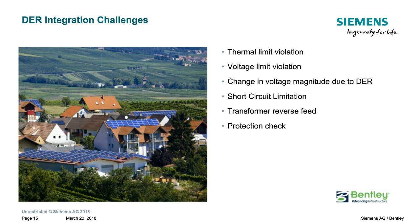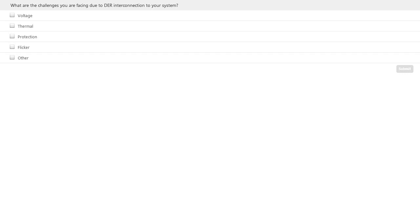Distributed energy resources provide many advantages; however, integration presents significant challenges. These include thermal limit violation, voltage limit violation, rapid voltage fluctuation of PV causing flickering issues, short circuit limitations, transformer reverse feed, and protection coordination issues. A poll question: what are the challenges you are facing due to DER interconnection to your system? You can choose multiple options: voltage, thermal, protection, flickering, and other issues.